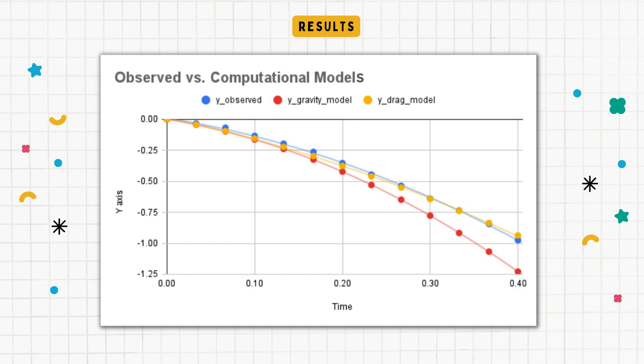As observed from the graph the distance traveled by the object of our first computational model was the biggest one out of all three. This is most likely due to the fact that no upwards force was considered as compared to the other two experiments.